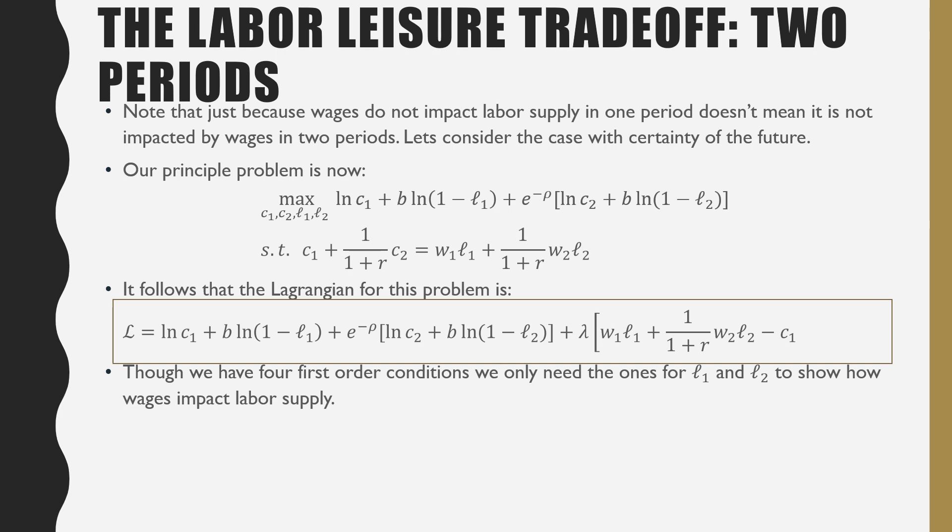Even though we have four first order conditions, we only need L1 and L2 to show how wages impact labor supply.